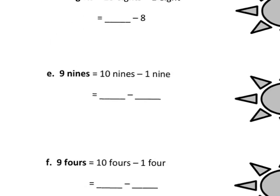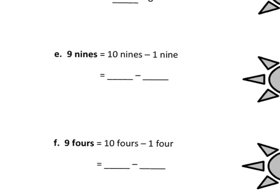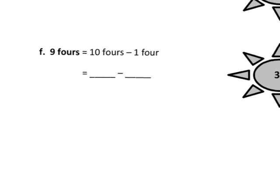And I think you get the idea. Let's just do this last one, F. 9 fours is 9 times 4. So that's really 10 fours minus 1 four. So 10 fours is 40 minus 1 four. And 40 minus 4 is 36. So 9 times 4 is 36.